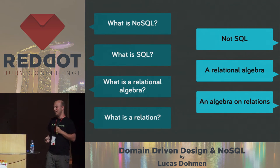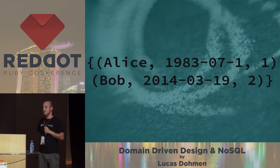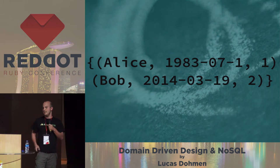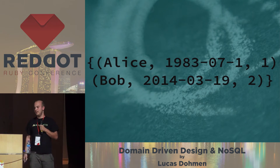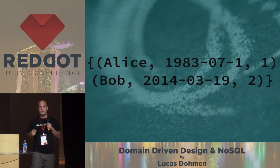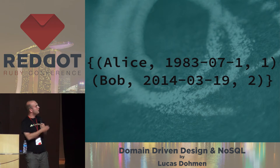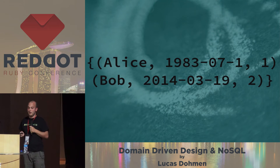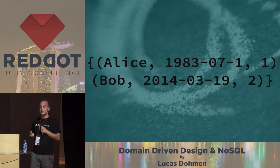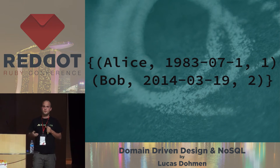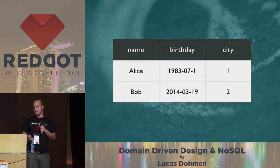So what is a relation? A relation is a set of tuples. In this case, we have two tuples — one is Alice, some date, and a number; and the other one is Bob, some date, and a number. And we can't really say what this means, because what is this number at the end? This second one could be a birth date — it could be anything. We don't know.